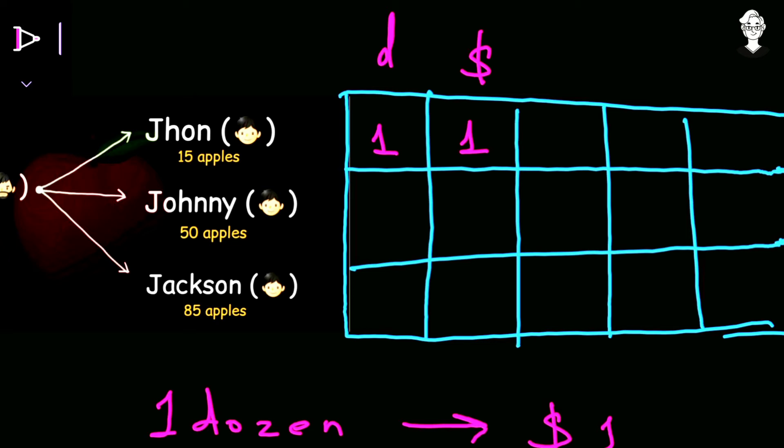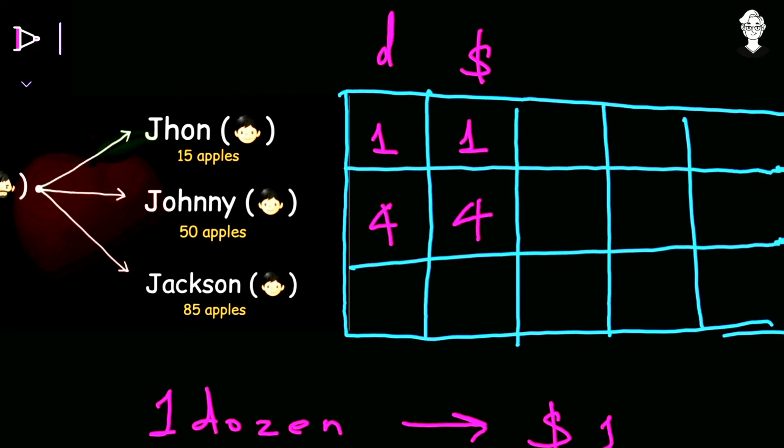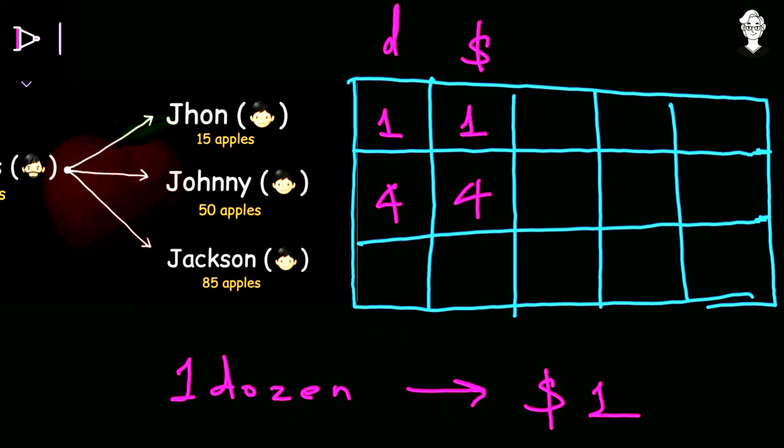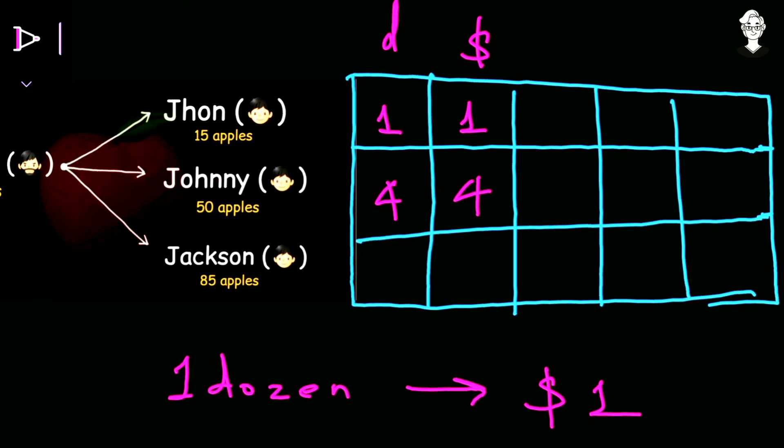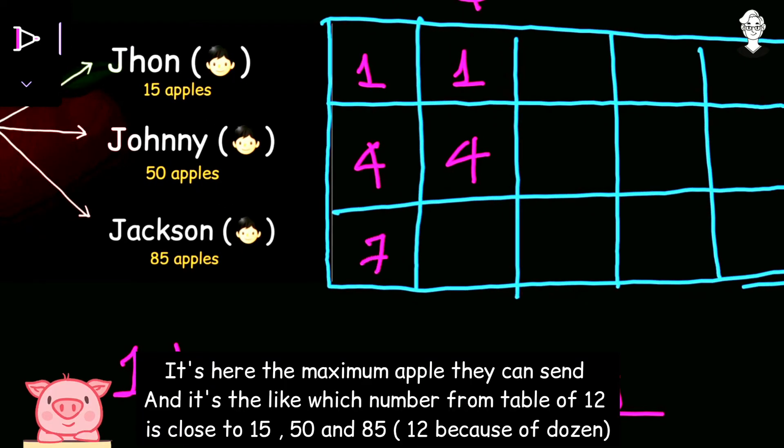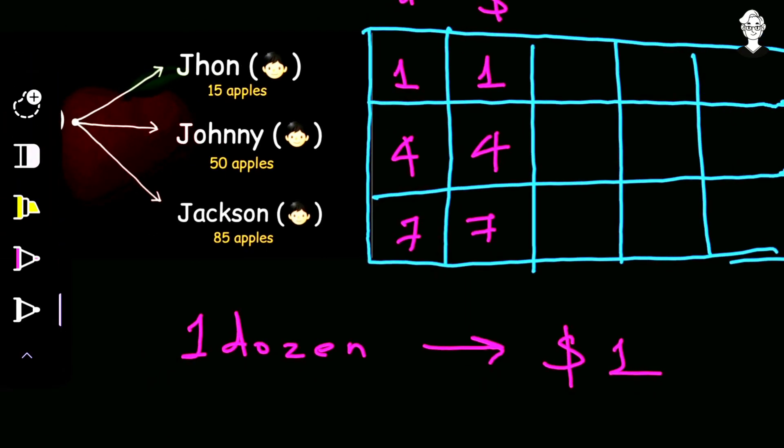Johnny is having 50 apples so he can sell a maximum of 4 dozen because 4 times 12 is 48, so he can sell 4 dozens of apples so he will gain an amount of $4. Jackson is having 85 apples so he can sell 84 apples, that is 7 dozens of apples, and the amount he will receive is $7.